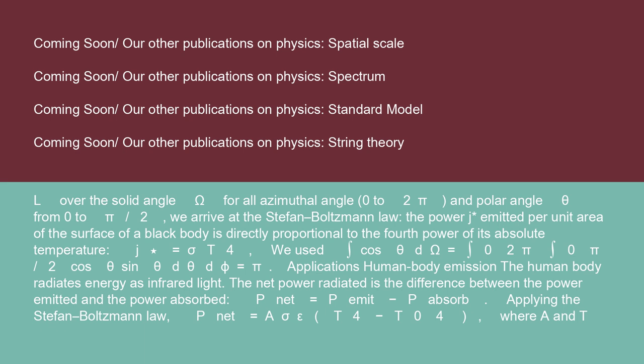The power j* emitted per unit area of the surface of a black body is directly proportional to the fourth power of its absolute temperature: j* = σT⁴. We used ∫cosθ dΩ = ∫₀^{2π} ∫₀^{π/2} cosθ·sinθ dθ dφ = π.